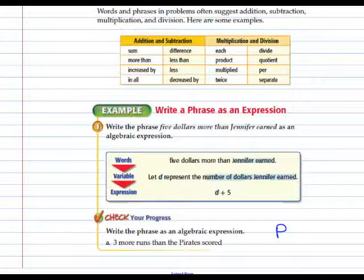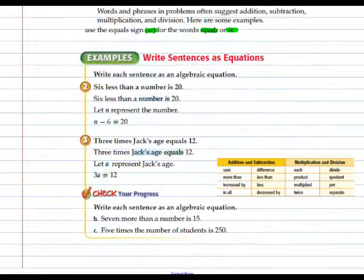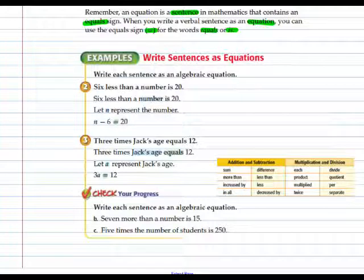When you write a verbal sentence as an equation, you can use the equal sign for the words equals or is. In example 2, 6 less than a number is 20. n represents the number, so n minus 6 equals 20.